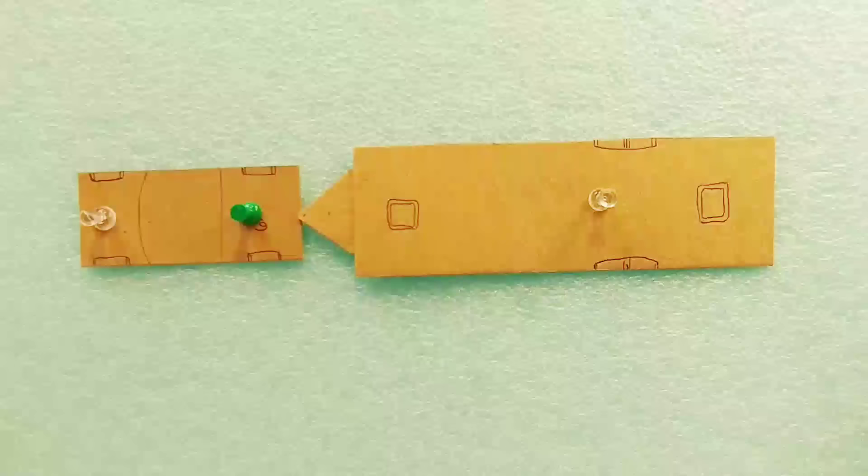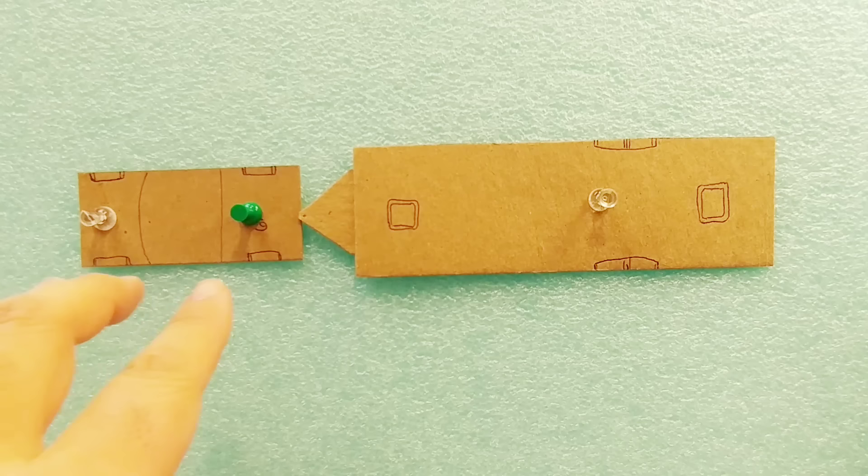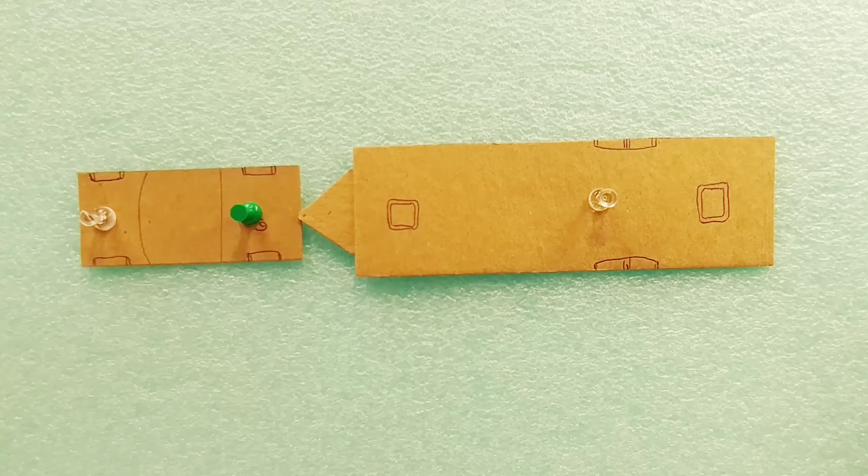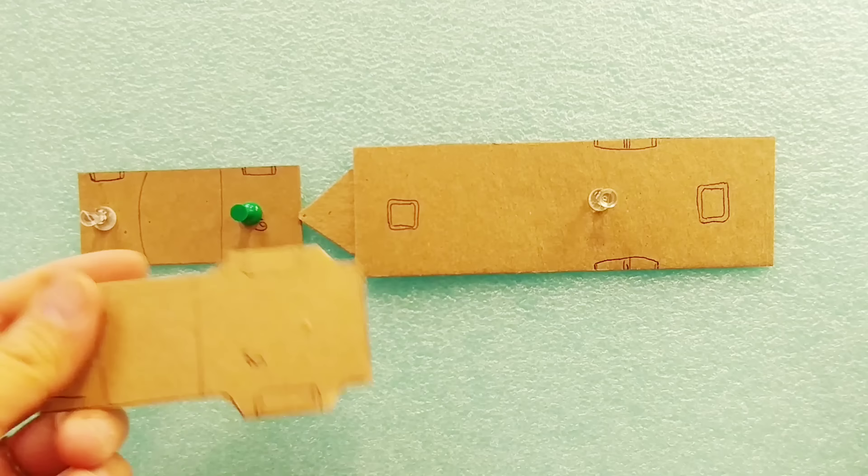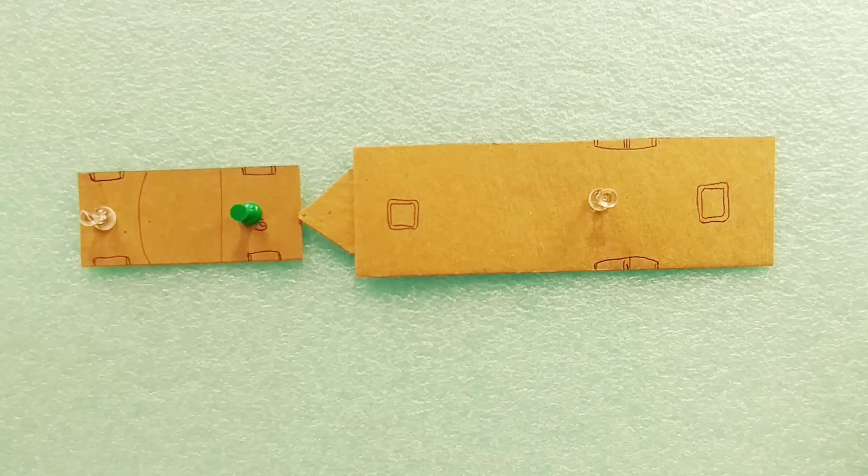So first of all, I made these little cardboard cutouts. One of them is a visual of a trailer and the other one is a visual of a truck. Now I have three of these cutouts. This specific one represents a six foot bed, this one represents an eight foot bed, and this one represents an eight foot bed with dual rear wheels.